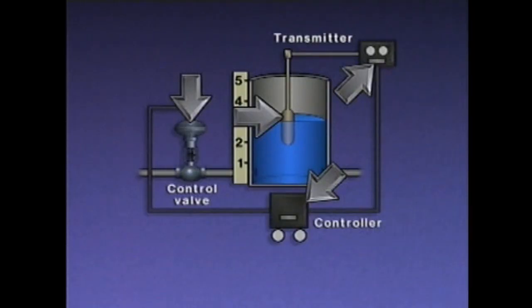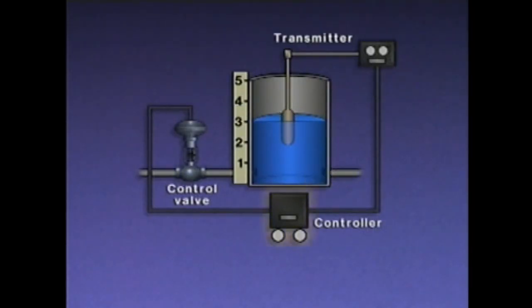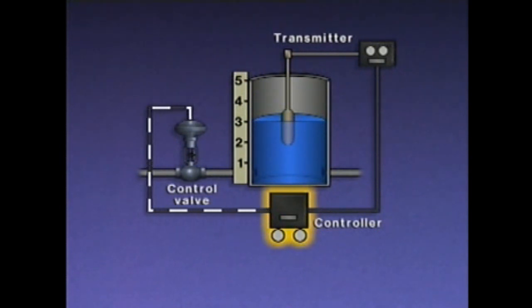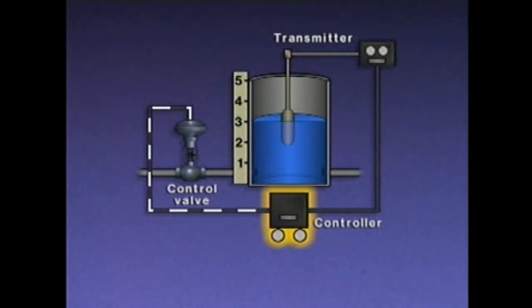Now let's try some practice questions related to this material. The controlling element, or controller, computes the difference between the measured level and set point and sends a corrective signal to the final control element.